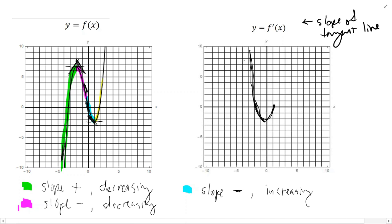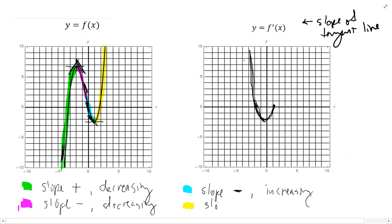The final portion of the graph — from x equals 1 out to infinity — the slope is positive because the function is increasing. The tangent lines get more and more steep further out. So for this yellow portion, the slope is positive and increasing. On the derivative graph, I should be above the x-axis and increasing. So the graph of the derivative of this function might look something like this.